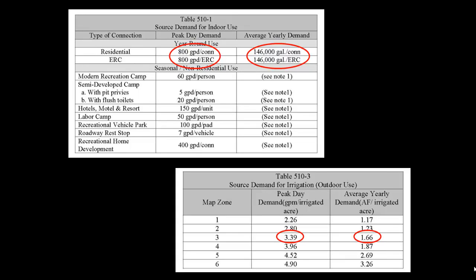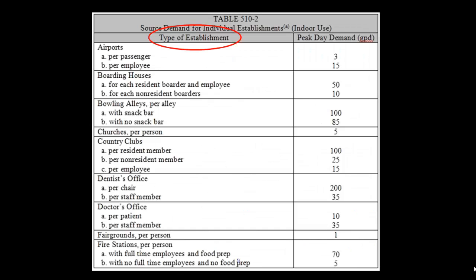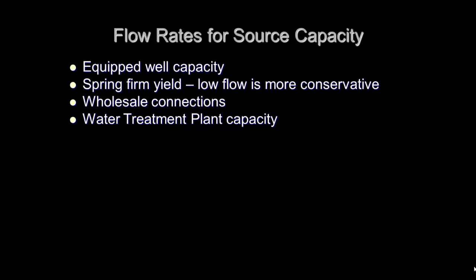These are copies of Tables 510-1 and 3 showing the minimum values for indoor and outdoor source demands. Table 510-2 lists demands for various types of establishments that may be associated with non-community water systems. This table includes many other establishment types not shown here. We often get questions on where to find the flow rates to use in the capacity calculations. To get these values, it may take some work and should be determined during the survey. For example, they may include the equipped well capacity for a well, yield of a spring, or low flow — which is more conservative and can be calculated with a stopwatch and a gallon bucket during the survey. Flow rates may also be based on a wholesale connection agreement or the capacity of a water treatment plant.